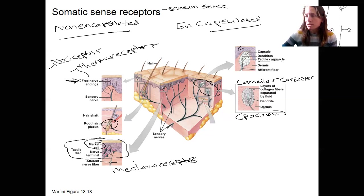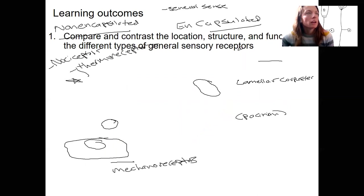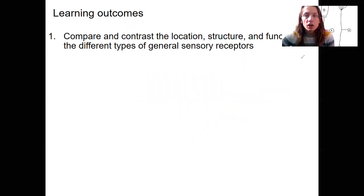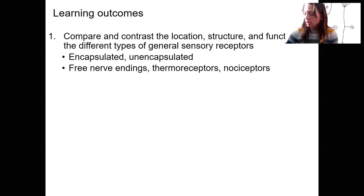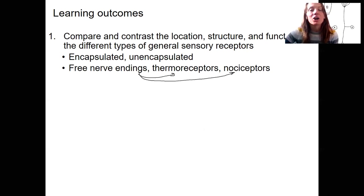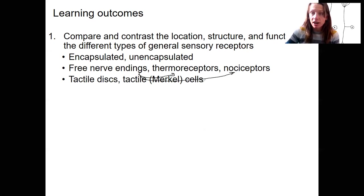Let's review the general location, structure, and function of different types of general sensory receptors. This covers encapsulated versus unencapsulated. Free nerve endings transmit thermoreception and nociception. Tactile discs are non-encapsulated and made up of the Merkel cell along with the axon it connects to — two cells. Then we have the encapsulated ones: tactile corpuscles respond to high-frequency vibration and touch, and all of these are types of mechanoreceptors.